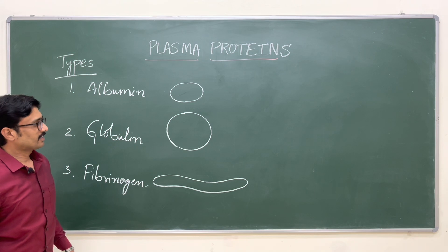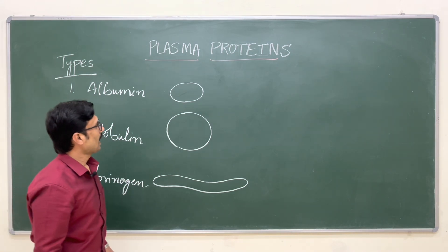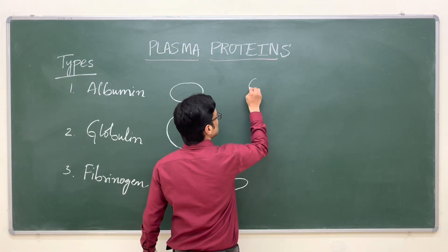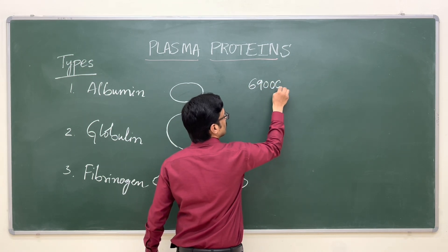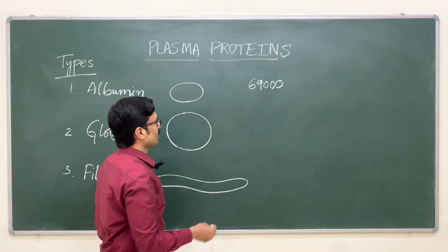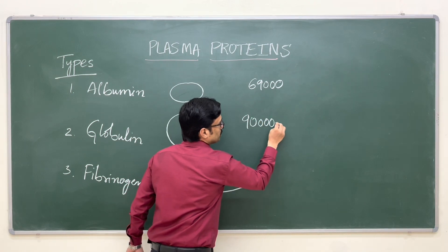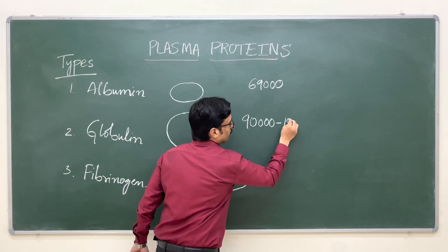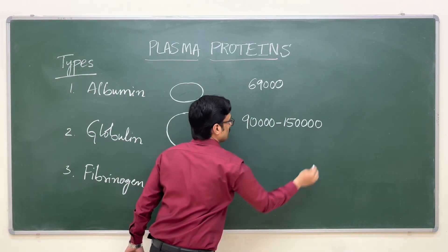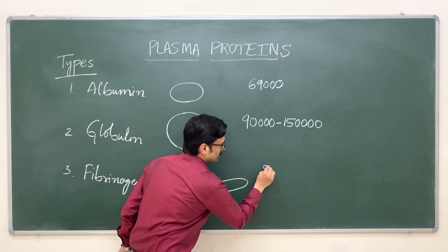Now let us see the molecular weight of these plasma proteins. Albumin molecular weight is around 69,000. Globulin molecular weight is around 90,000 to 1,50,000. The fibrinogen molecular weight is around 5 lakhs.